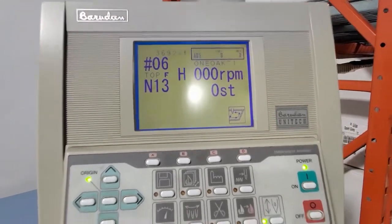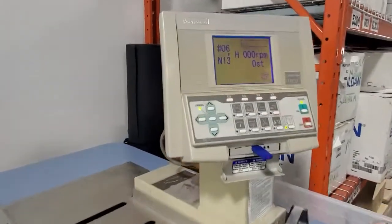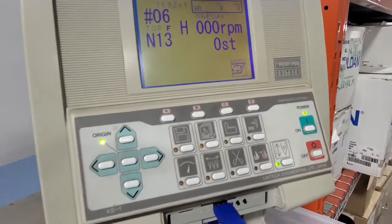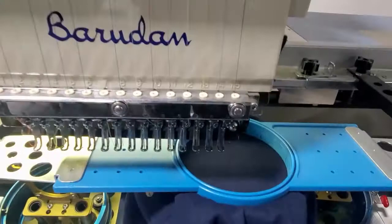Now, to check where it's going to sew, press the D button. You can see it here.